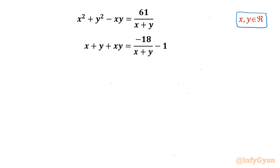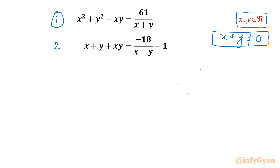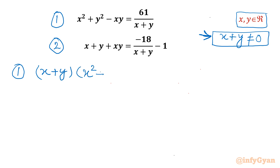Let us get started by writing that the denominator cannot be 0, so x plus y should not be equal to 0. This is one condition. Now I will begin by writing equation numbers. Since x plus y is non-zero, I can multiply both sides of equation 1 with x plus y. So equation 1 becomes x plus y times x squared plus y squared minus xy equal to 61.